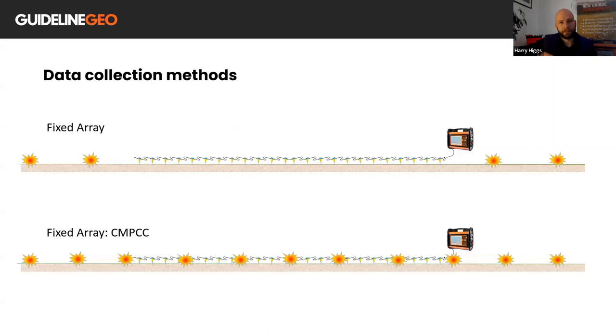In terms of data collection methods the most simple array is a fixed array with one or a few off-end shot positions. The result from this is a single one-dimensional model which is centered in the middle of the array and it represents an average of the ground conditions beneath the array. This method is popular for VS-30 surveys but for results to be accurate it assumes that layers are horizontal and that there is little or no horizontal change in the shear wave velocity below the array.